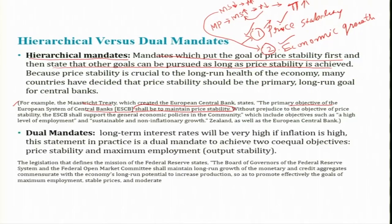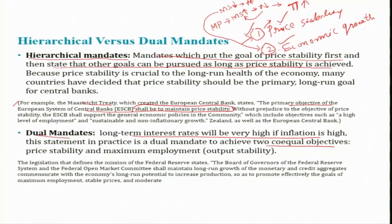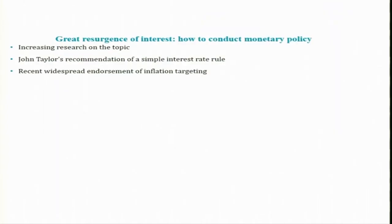In contrast, there is another mandate called the dual mandate, which gives equal importance to both price stability and maximum employment — that is, maximum output. Both should be achieved simultaneously. For example, the Federal Reserve follows a dual mandate, giving importance to both price stability as well as economic or output stability.